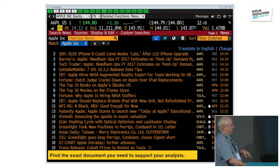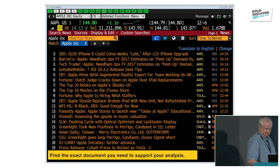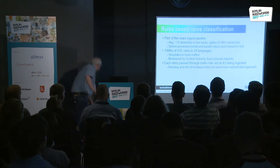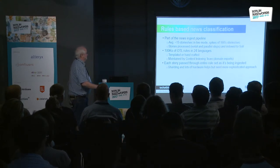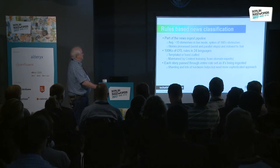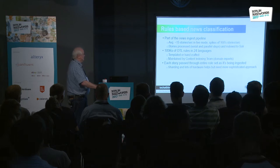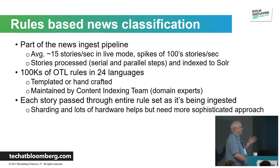That real-time scrolling capability is provided by the news alerting subsystem, which nowadays also runs on top of Luwak. Rules-based news classification is part of the news ingest pipeline, which receives stories from various feeds at an average of around 15 stories per second. But news can be very bursty, so at any given time we might see spikes of many times that rate.